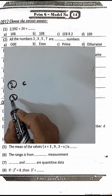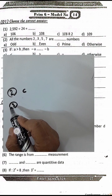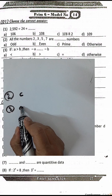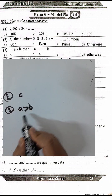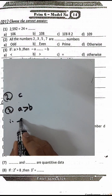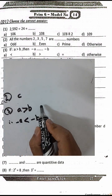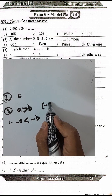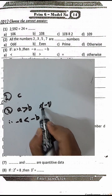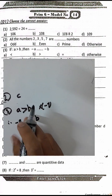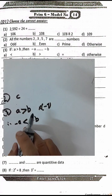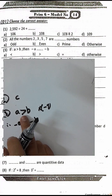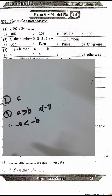Question number 3: If a is greater than b, then negative a is less than negative b. This is a property about inequality — when you multiply by negative 1, you must change the direction of the inequality.